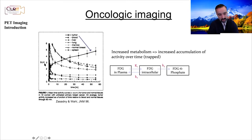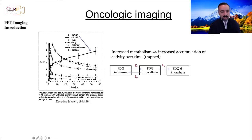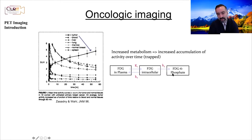As you inject fluorodeoxyglucose, it's first in the plasma and blood, then it enters tissue and into the cells. After that there's a process of phosphorylation, where you have fluorodeoxyglucose-6-phosphate. The key point is that if you have increased metabolism, such as in tumors, you have increased accumulation. The K4 here is assumed to be very small — sometimes it's just totally ignored.